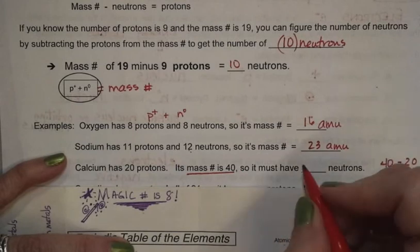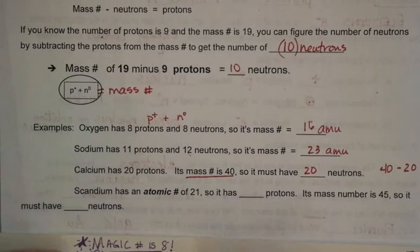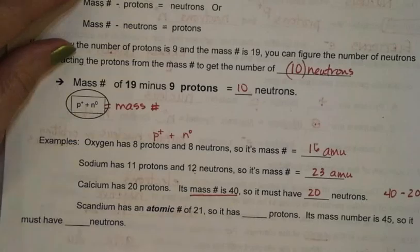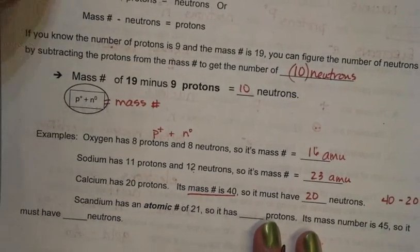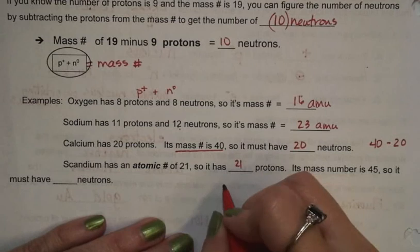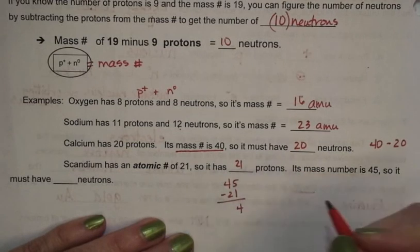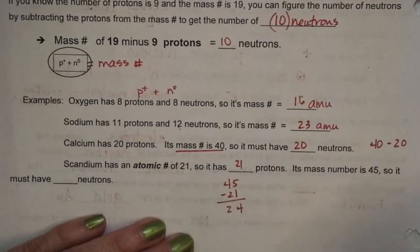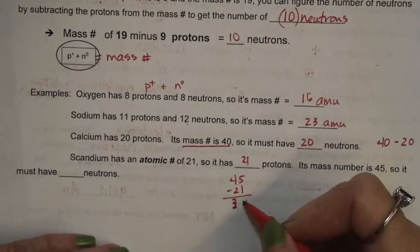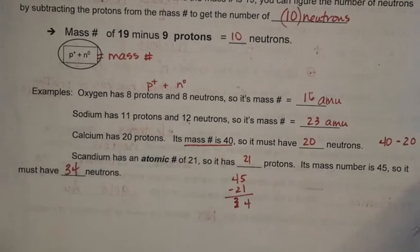Scandium: if you look at scandium on the periodic table, it has an atomic number of 21, so it has 21 protons. Its mass number is 45. So we take 45 minus 21 and we get 24 neutrons — wait, actually that should be 24. So 45 minus 21 gives us 24 neutrons. And we will start on number 11 tomorrow.